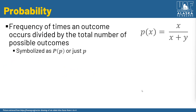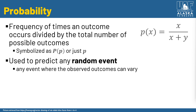Going back to probability in general, the definition is just a verbal explanation of the formula: frequency of times an outcome occurs — x — divided by the total number of possible outcomes — x plus y. This is symbolized as P(x) or just P. You'll encounter p-values in psychology and social science, and p-values are essentially a measure of probability. We use probabilities to predict any random event — any event where the observed outcomes can vary in random ways.